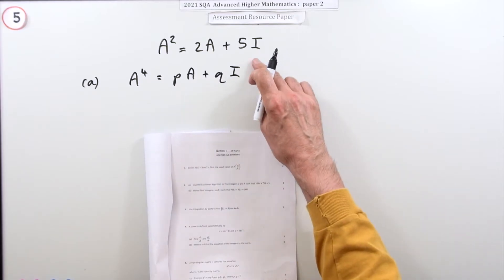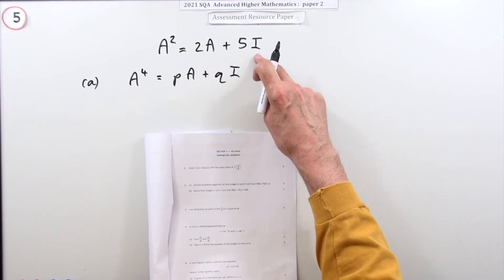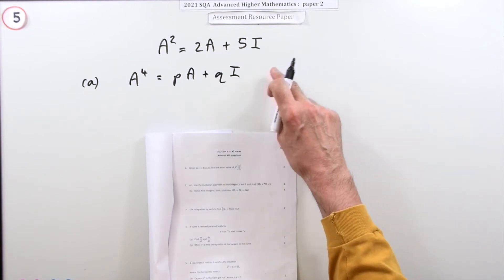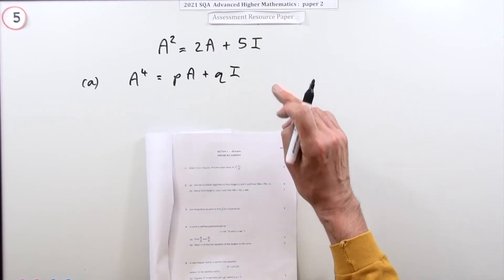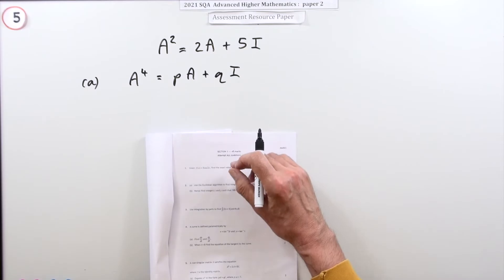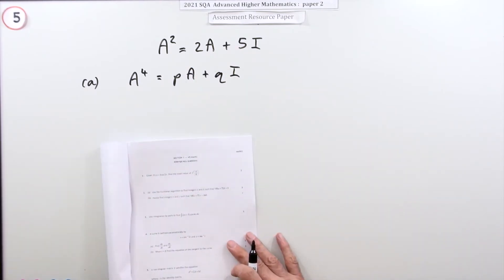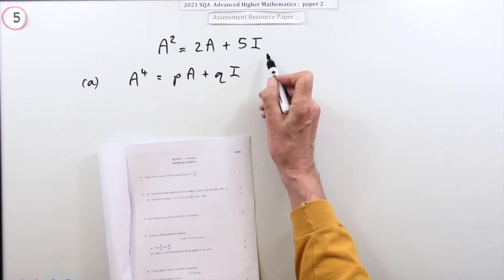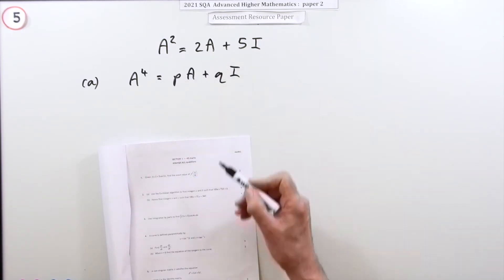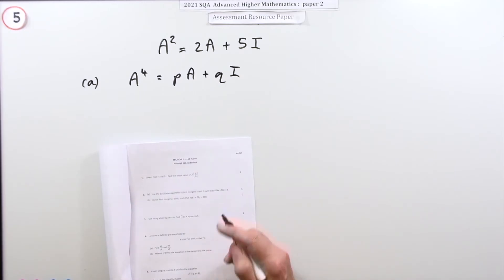Make sure you keep the order of multiplication the same because they're not commutative, apart from multiplying by I—you can do that either side. The question states this is true about a particular matrix: A² = 2A + 5I.